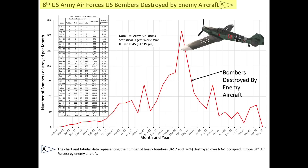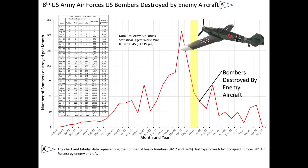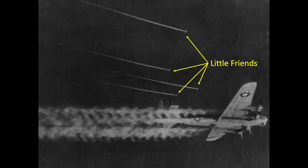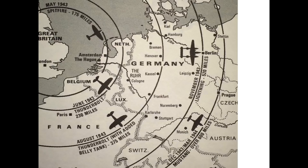A plot of the tabular data is shown here. The x-axis is month and year. The y-axis is the number of bombers destroyed per month by enemy aircraft. The line in the body of the chart tracks the number of bombers destroyed per month by enemy aircraft. There was a dramatic reduction in bombers shot down by enemy aircraft after June 1944. The destruction of the Luftwaffe occurring over the previous five months to support the D-Day landings was now paying off. There were also greater fighter escorts available during this period.